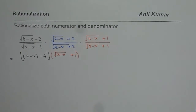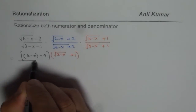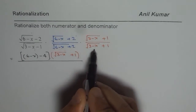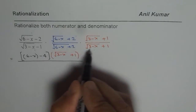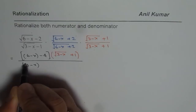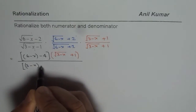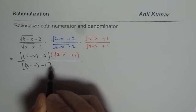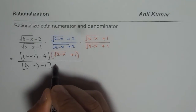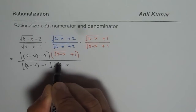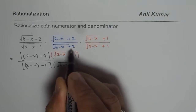Now let us look at the denominator part. In the denominator, you expand those two conjugate terms. When you expand them, you get 3 minus x minus 1 squared, which is minus 1. And what remains in the denominator is square root of (6 minus x) plus 2.